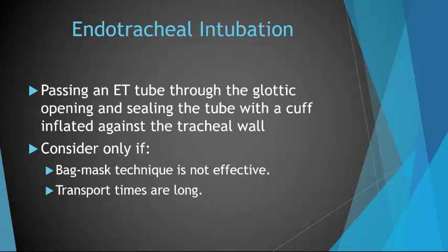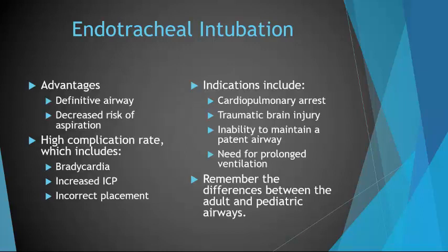Endotracheal intubation involves passing a tube through the glottic opening and sealing the tube with a cuff inflated against the tracheal wall. This is your most definitive airway, but it is also a skill that's very rarely used with pediatric patients. Advantages include a definitive airway and decreased risk of aspiration. However, you do have high complication rates, which include bradycardia due to vagal response, increased intracranial pressure, or incorrect placement.